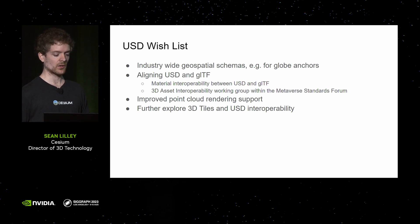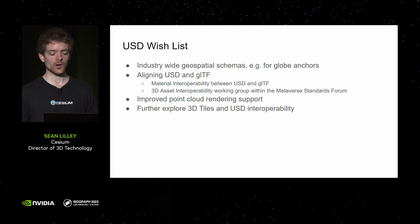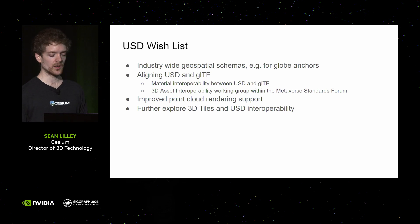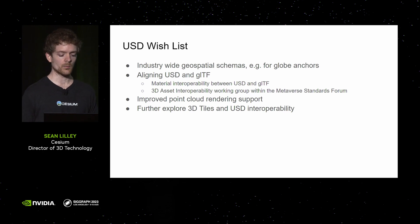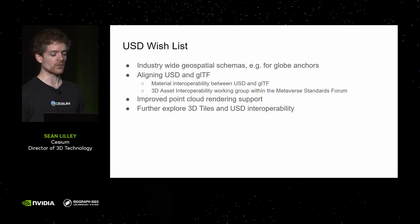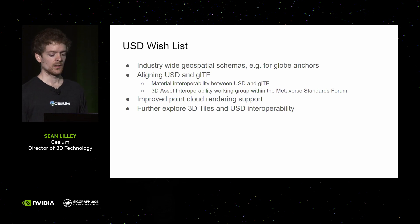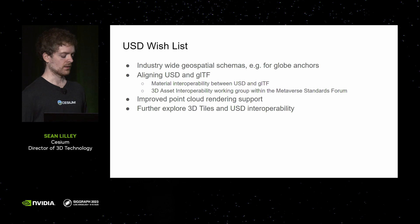Looking at our wish list for USD: we're definitely interested in industry-wide geospatial schemas, especially for anchoring objects on the globe — some common way to specify a longitude-latitude in a coordinate system. We're also very interested in USD and GLTF alignment, particularly material interoperability, which is being explored by the 3D Asset Interoperability Group at the Metaverse Standards Forum. We'd also be interested in improved point cloud rendering support, since there are a lot of use cases for digital twins to have point cloud data. Finally, we'd like to explore more 3D Tiles and USD interoperability — how to use 3D Tiles to spatially subdivide USD, or how to take concepts from 3D Tiles and turn them into USD.